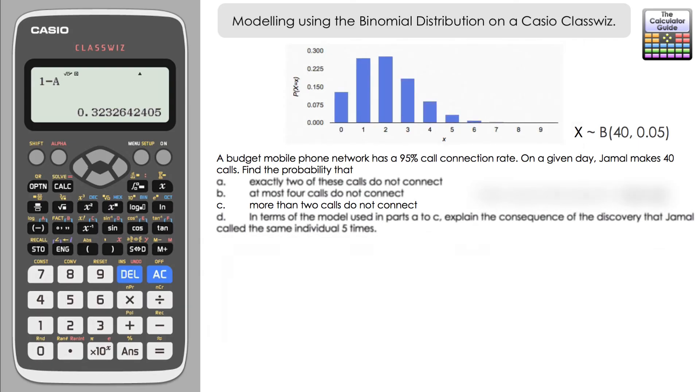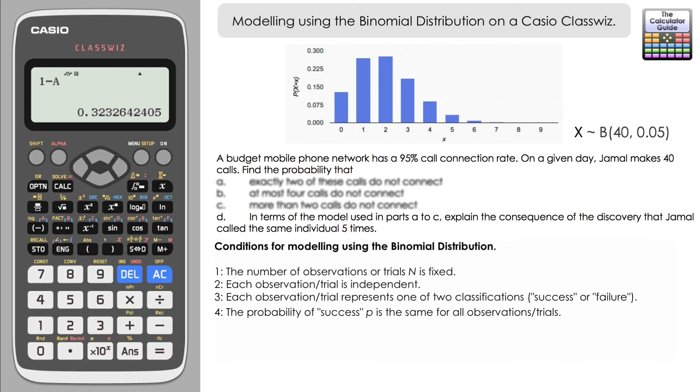Now for the very last question there, it says in terms of the model used in parts A to C, so that's the binomial, explain the consequence of the discovery that Jamal called the same individual five times. Well, if you think back to the beginning, one of the conditions of us modeling this with the binomial distribution was that each call was independent from each other.